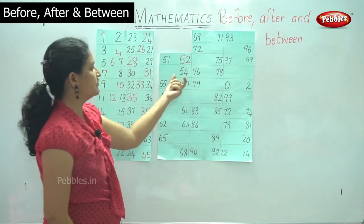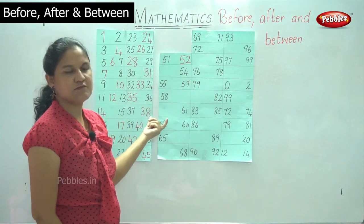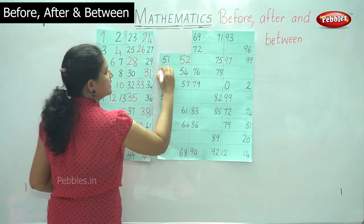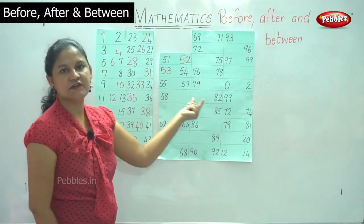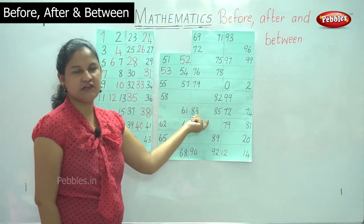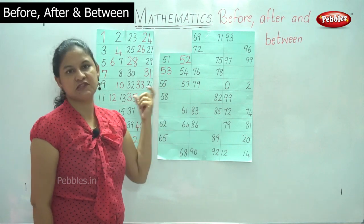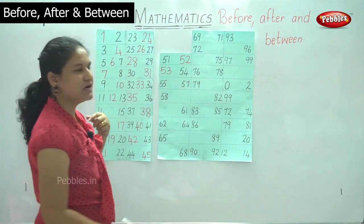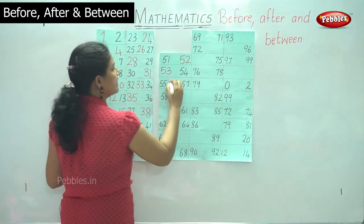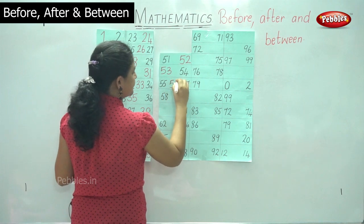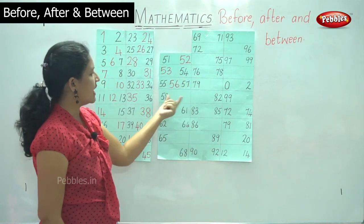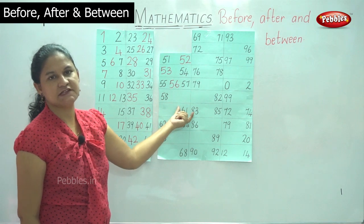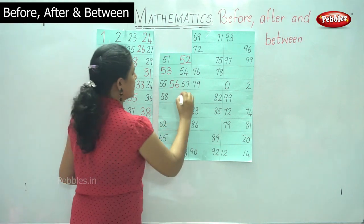We have number fifty-four, and what comes before number fifty-four is number fifty-three. Then we have numbers fifty-five and fifty-seven, and what comes in between these two numbers is number fifty-six. We have number fifty-eight, and what comes after fifty-eight is number fifty-nine.